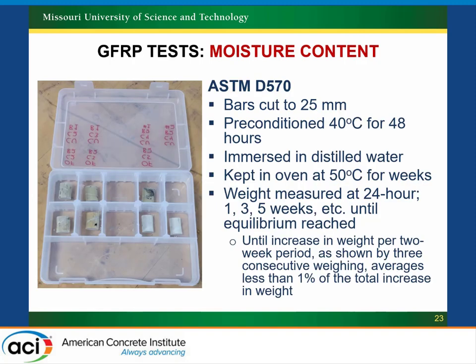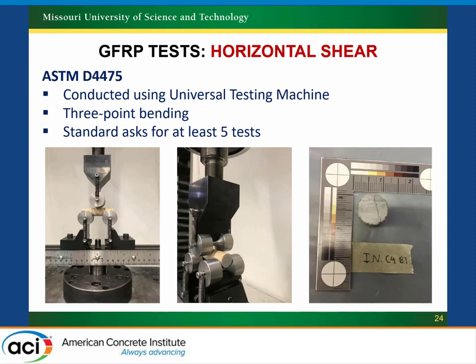We also looked at moisture content, which was something new — there's no real specification for controlling the environment of a field sample once extracted. We tried to look at the in-situ moisture content of the materials and whether it varied at different locations around the country. The next test was a horizontal short shear test, where the specimen length is a function of bar diameter. The standard suggests five tests, though that's difficult when taking cores, but the goal was to develop a database and compare to early-stage test results.